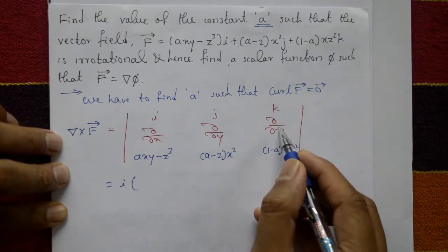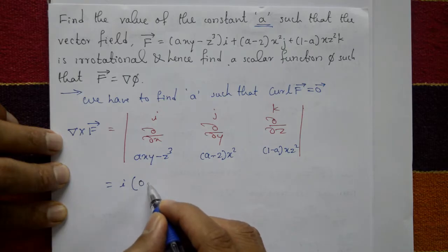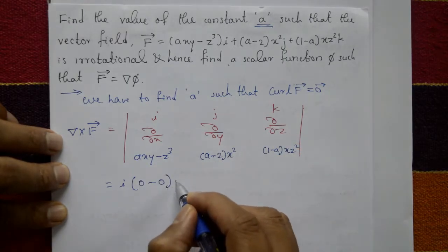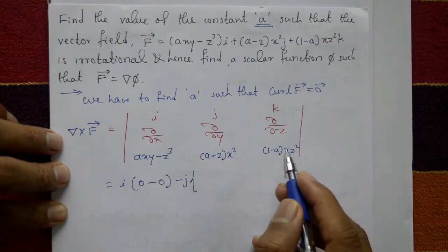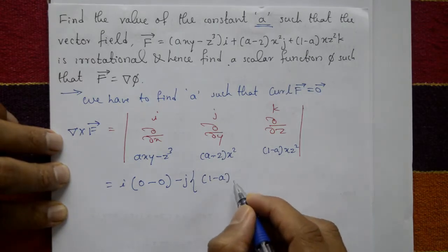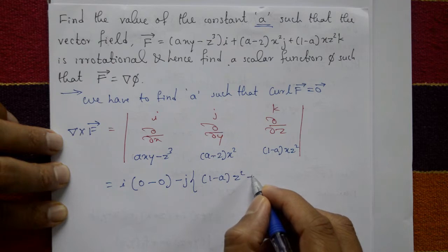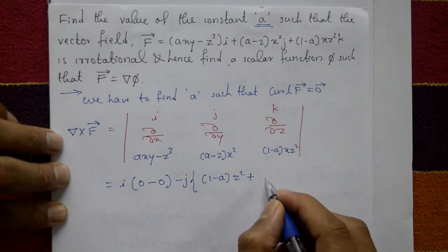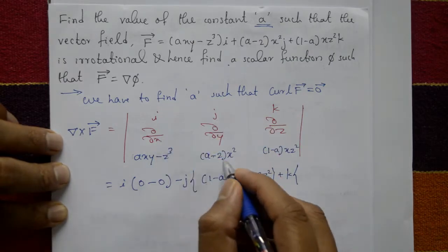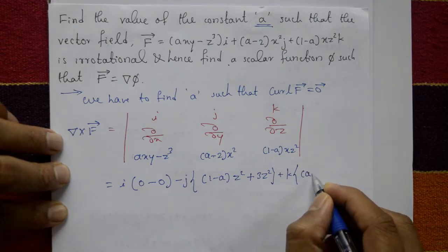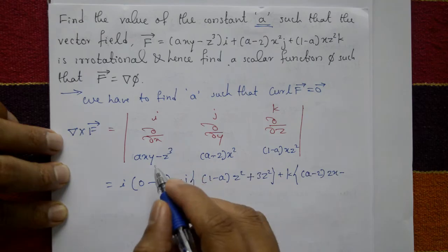Expanding the determinant: the i component involves differentiating with respect to y and z — the z variable gives 0. For the j component, differentiating (1 minus a)xz squared with respect to x gives (1 minus a)z squared, and differentiating (axy minus z cubed) with respect to z gives minus 3z squared. For the k component, differentiating (a minus 2)x squared with respect to x gives 2(a minus 2)x, and differentiating axy with respect to y gives ax.